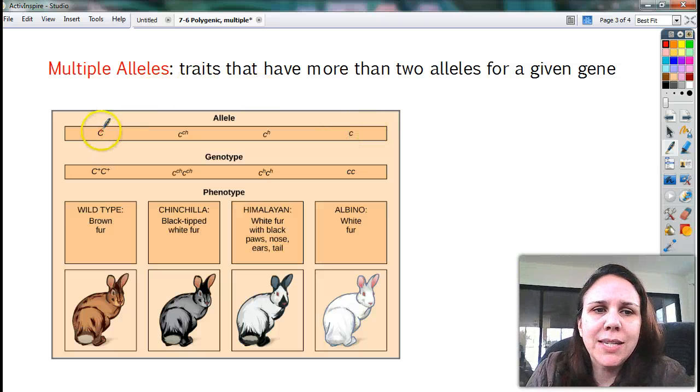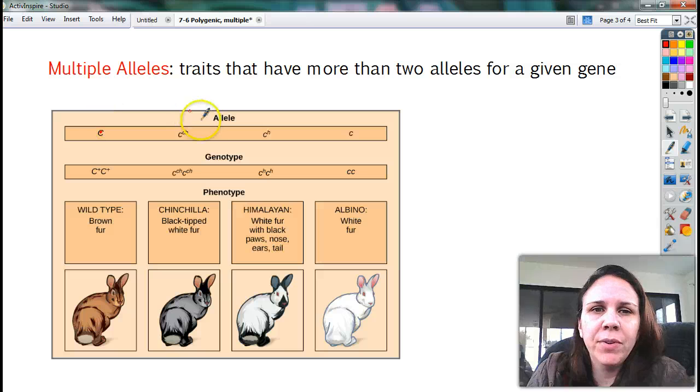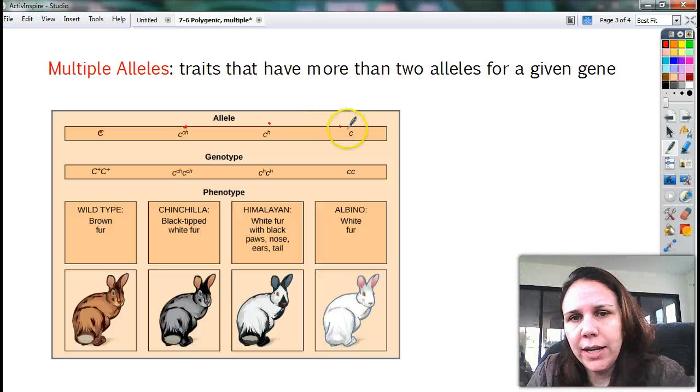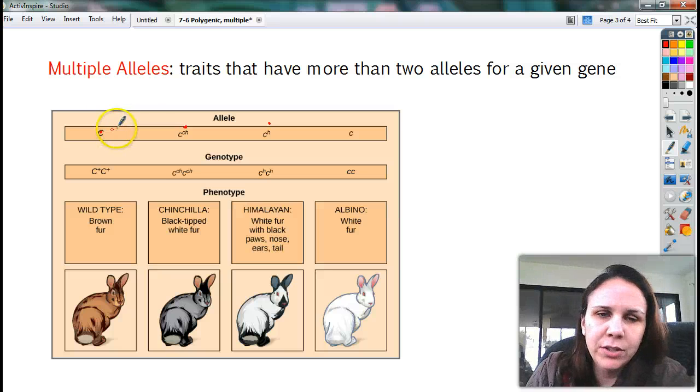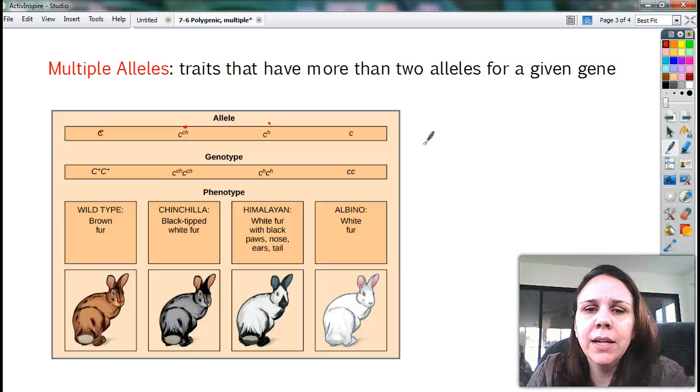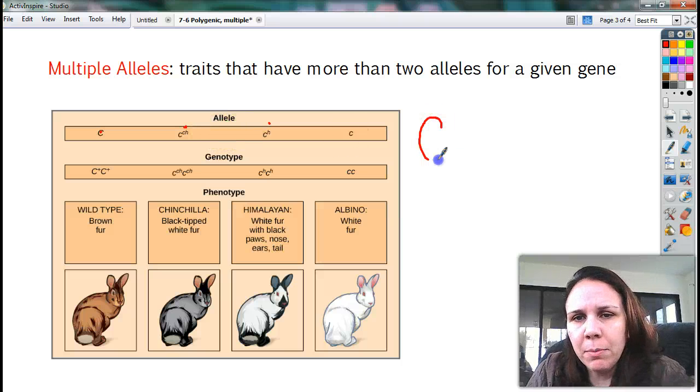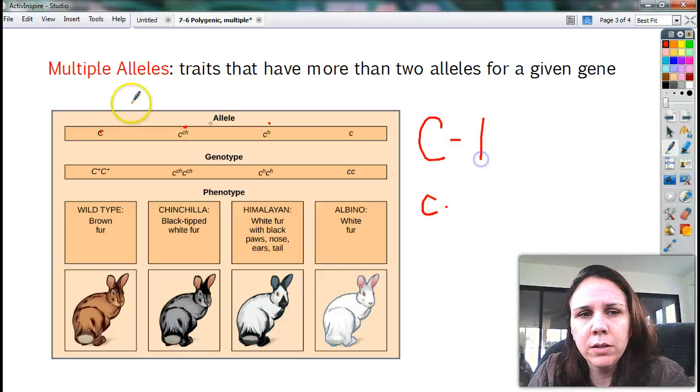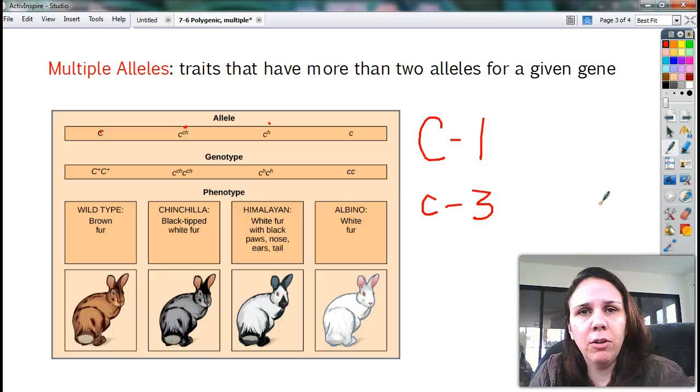So if I have two big C's together, I'll get a brown bunny rabbit. If I have a big C and a c^ch, I'll have a brown bunny rabbit. But if I have a c^h and an h, I'll have a chinchilla. If I have an h and a c, I'll have a Himalayan. If I have a c^h and a c, I'll have a chinchilla. If I have a big C and a little c, I have a brown. So again, now I'm starting to get much more variety in the phenotypes of the offspring. So a multiple allele is, I have a dominant and I have a recessive, but there may be more than one form of either. So this one, there's only one, the big C. But the little c, I have three different types. Whereas usually you just have one of each. You have one big and one small. You're done.